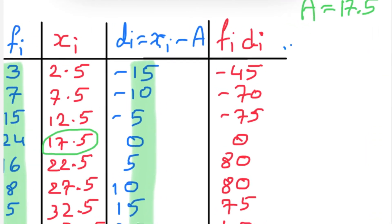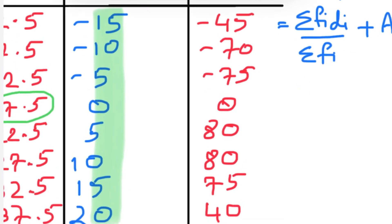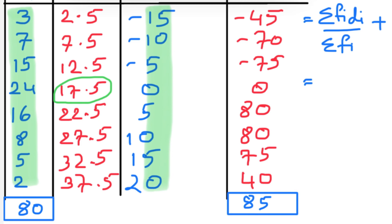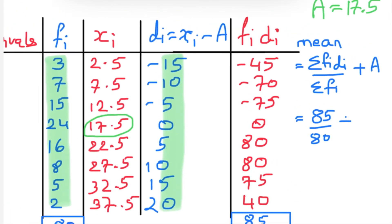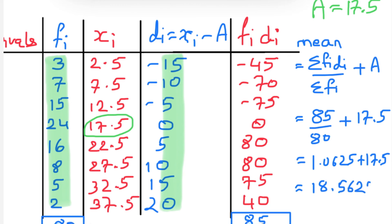The mean is given by the formula: mean = (Σfi·di / Σfi) + A. We have Σfi·di = 85, Σfi = 80, and assumed mean A = 17.5. So the calculation is 85/80 + 17.5, which equals 1.0625 + 17.5, giving the mean marks as 18.5625, or rounded to two decimal places, 18.56 marks.